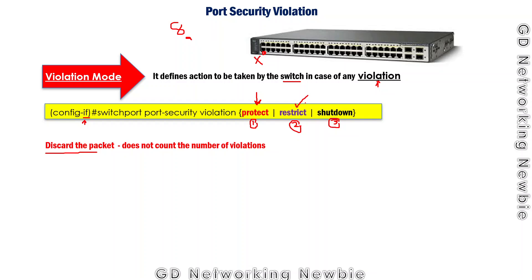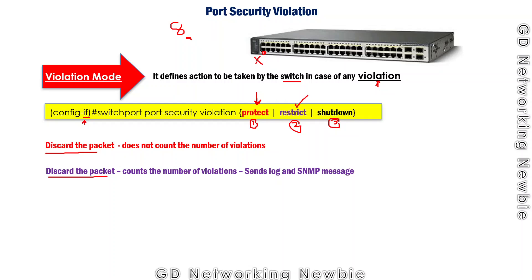If we configure the restrict mode of violation, the port performs three actions. First, it discards the packet. Second, it counts the number of violations — tracking how many times a violation has occurred on that port. Third, it sends log and SNMP (Simple Network Management Protocol) messages. As soon as a violation occurs, a log message is generated with relevant status information, and SNMP messages are also sent.